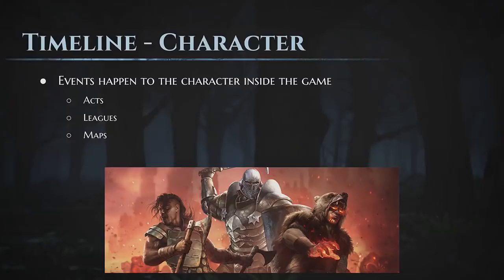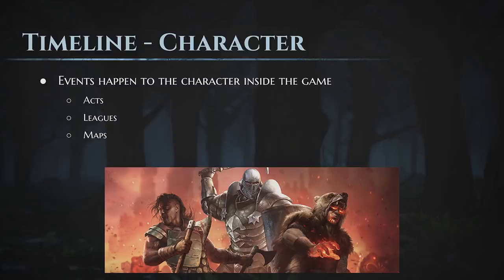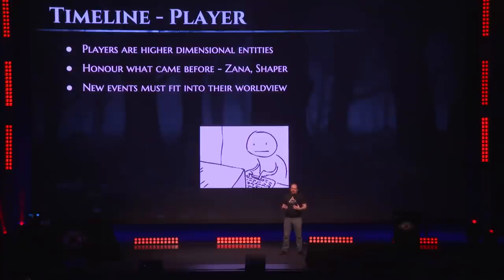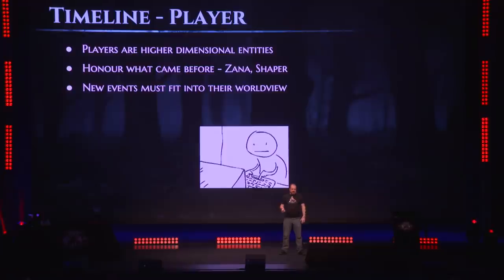Events that happen inside the game to the character — that's the character timeline. The character ran through the acts, did the leagues and the maps in that particular character's life. If you start a new character, they have a different character timeline. But players are higher-dimensional entities — they remember across all our carefully constructed stories, and their experience is different from the way the game proceeds. For this reason, we must honor what came before. We absolutely considered: what happens now that the Shaper and the Elder are dead? We can't simply retcon Zana and the Shaper storyline out of existence because players lived that, they identified with it. It has to integrate, be honored, be kept in, and we have to build on that. New events in leagues must also fit with previous events, even if they never interact directly.